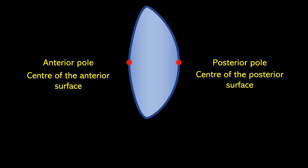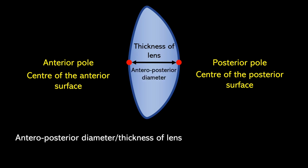There are two points to know on anterior and posterior surface of lens: anterior pole and posterior pole. Anterior pole is the center of anterior surface and posterior pole is the center of posterior surface. Distance between these poles is measured as thickness of lens or anteroposterior diameter of the lens which is about 3 mm at birth and increased to about 6 mm in older age.